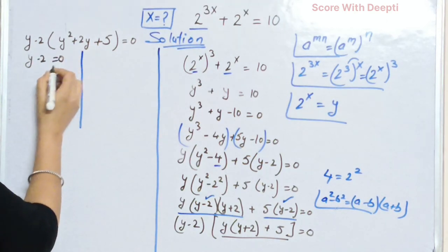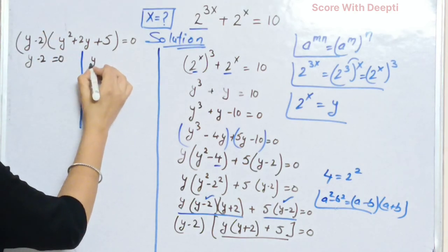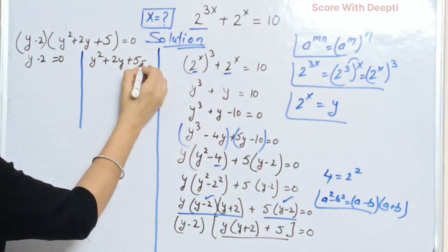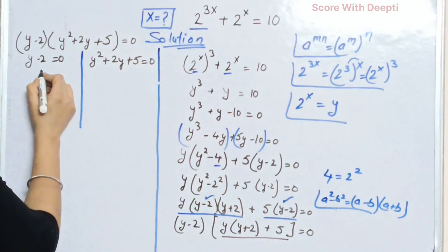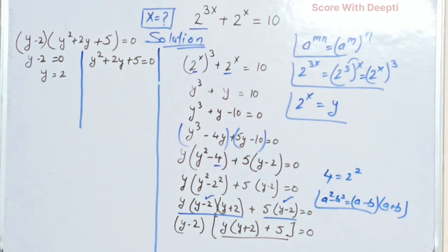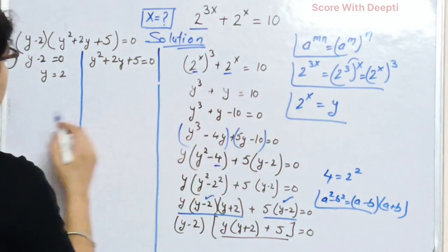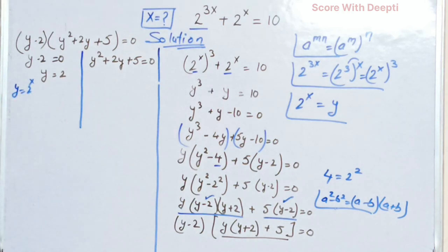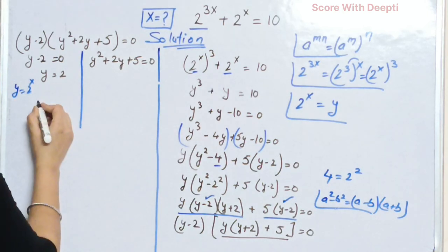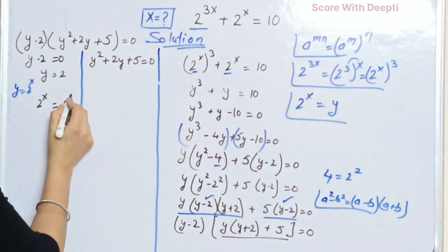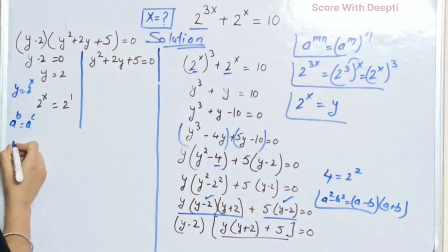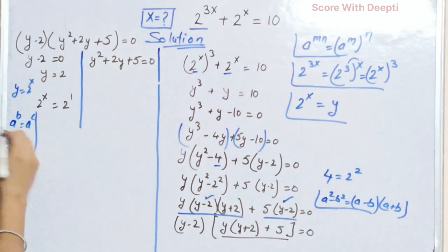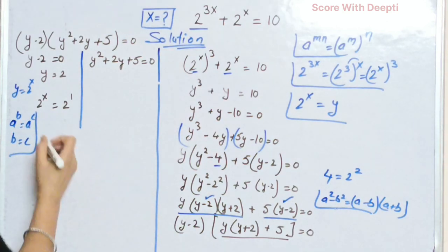Next we put y minus 2 equal to 0 and y squared plus 2y plus 5 equal to 0. From the first factor, we solve and get y equal to 2. Taking y as 2 raised to power x, we write 2 raised to power x equal to 2, which equals 2 raised to power 1. Applying the rule that a raised to power b equals a raised to power c implies b equals c, we get x equal to 1.